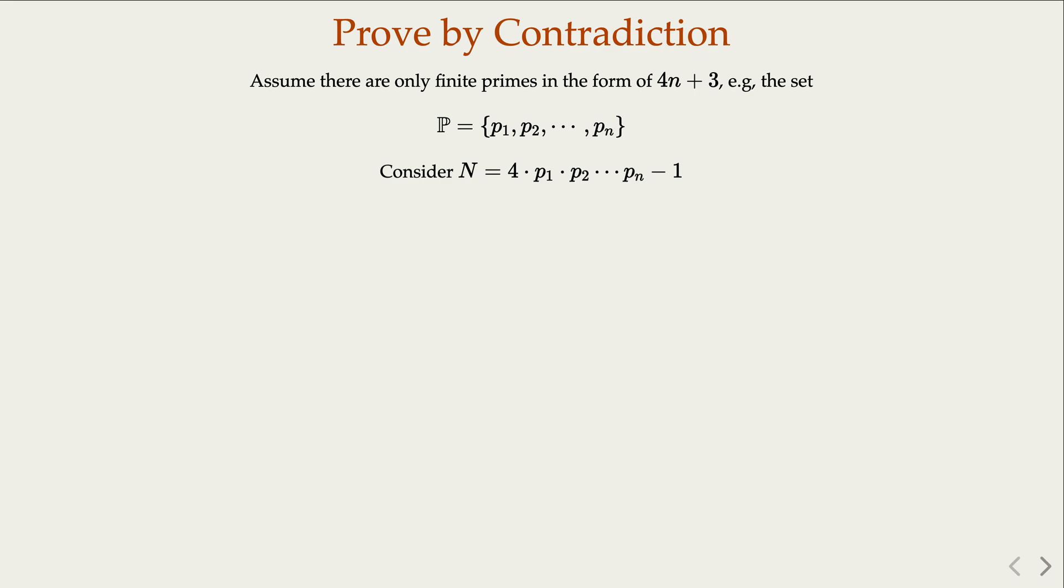Now, first of all, we can draw a few conclusions about that. Notice that N, when you mod 4, is negative 1, which is equivalent to 3. So N is indeed in the form of 4m plus 3.